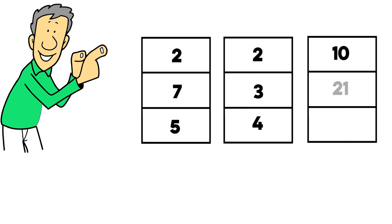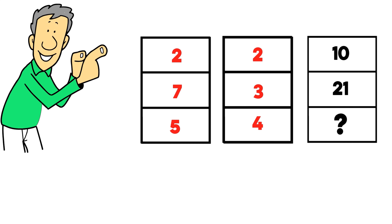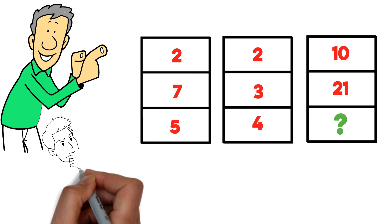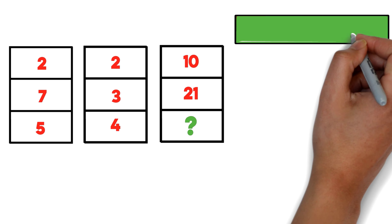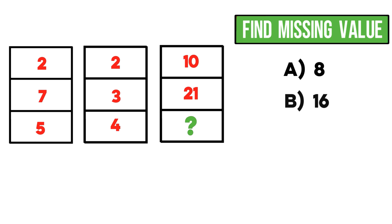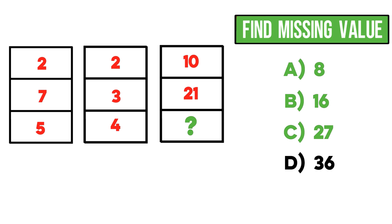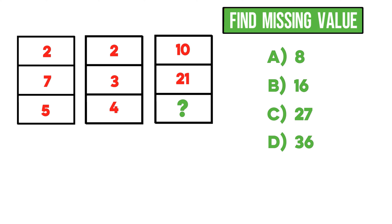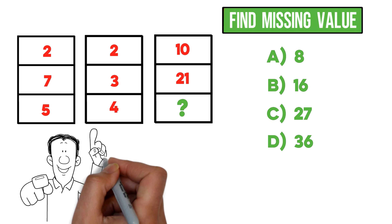I'm extremely excited to share this question that tests your pattern recognition skills. You're presented with three columns, each with three numbers. Column one has 2, 7, 5; column two has 2, 3, and 4; column three has 10, 21, and one missing number. You need to find the missing value from four choices: A) 8, B) 16, C) 27, and D) 36. Give yourself 5 to 10 seconds.